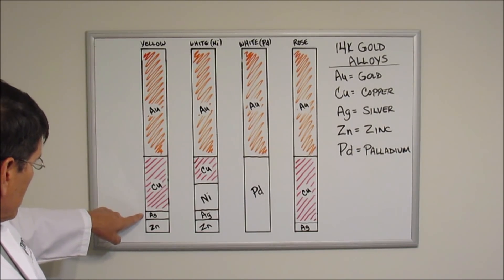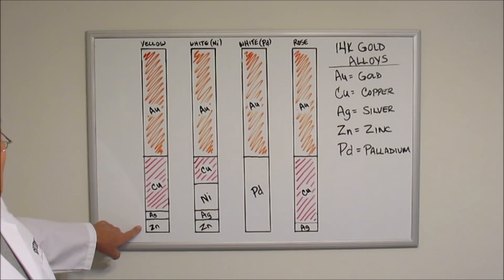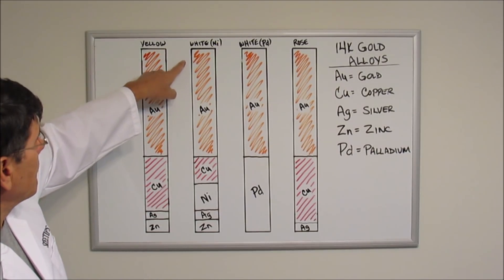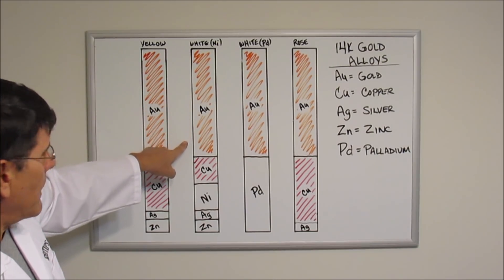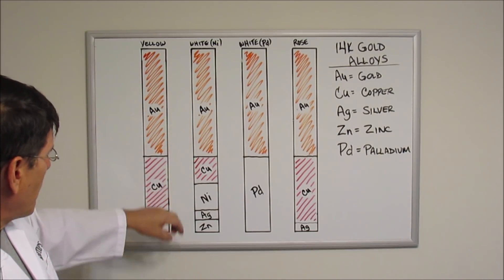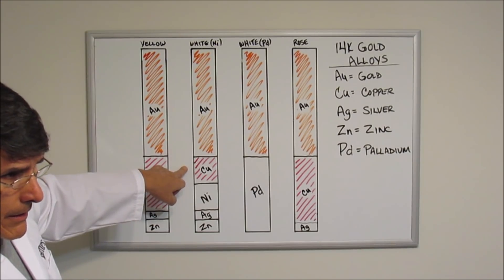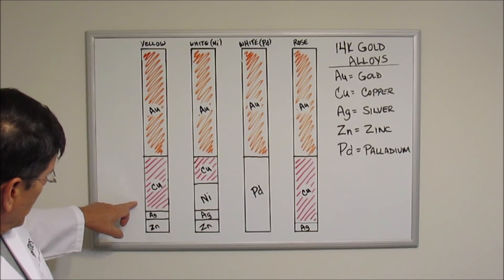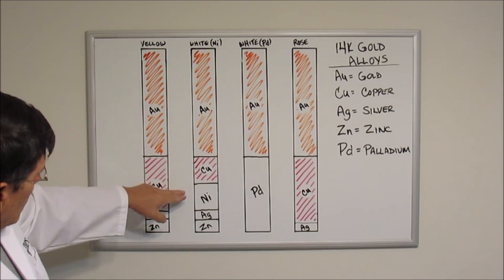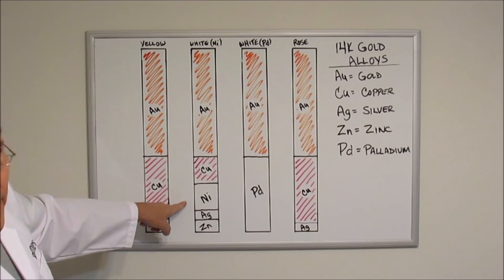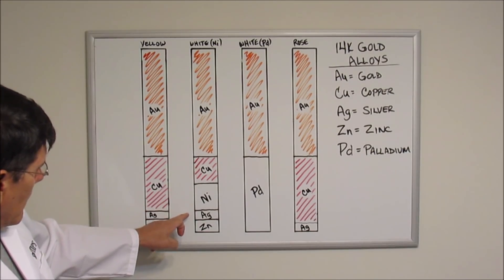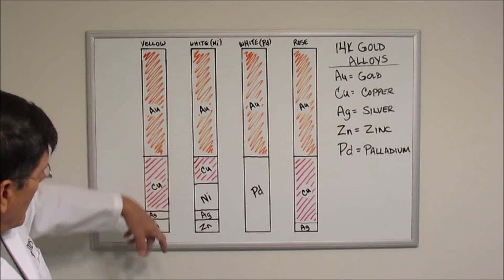The white gold alloyed with nickel has the same 59 percent gold in it, but the copper here is only about 15 percent. What they've done here is they've reduced the amount of copper from the yellow gold to 15 percent and added nickel, another white metal, and roughly about the same amount of silver and zinc.